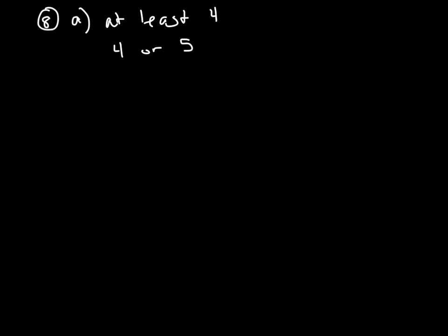Let's do exactly four first. Out of the five students, we want to choose exactly four, so we write 5C4. In the first parenthesis, we put the probability that they will be on a team, which is 0.39. In the second parenthesis, we put the probability they wouldn't be on a team: 1 minus 0.39 is 0.61. With probability, whatever number is to the right of the C goes on your first parenthesis — the opposite of how expansions work. The second exponent is five minus four, which is one.